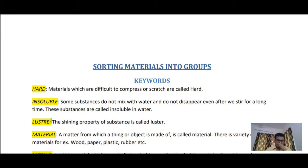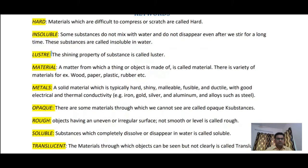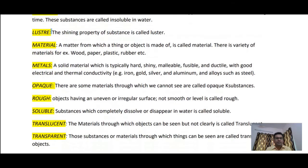The next word is 'metals'. Metal is a special type of material — normally solid — which is typically hard, shiny, malleable, and ductile, with good electrical and thermal conductivity. Examples include iron, gold, silver, and aluminium.